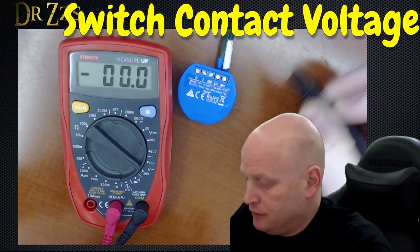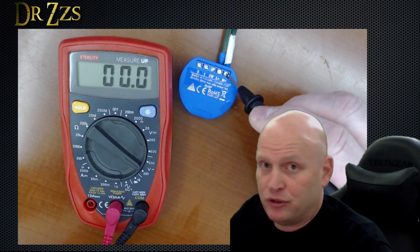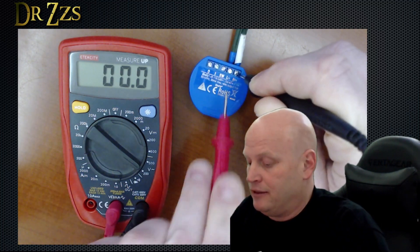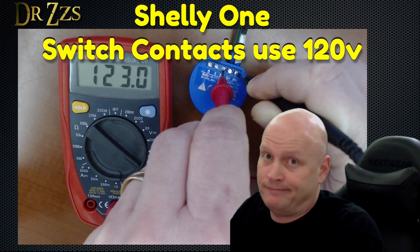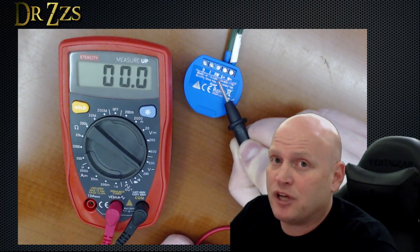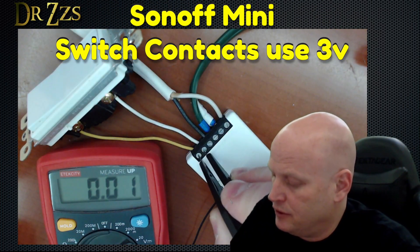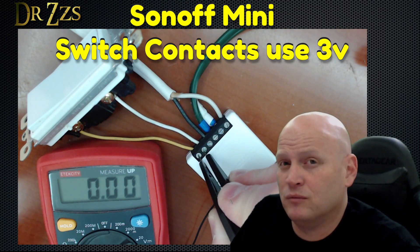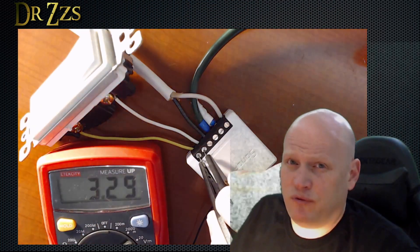So here's the Shelly connected to power. It's live. I'll be very careful. Now we measure between neutral and switch contact. Just make sure you're aware that that switch contact carries 120 volts. Measuring the voltage at the switch contactors gives me nothing when it's off. But when it's on, I get three volts.